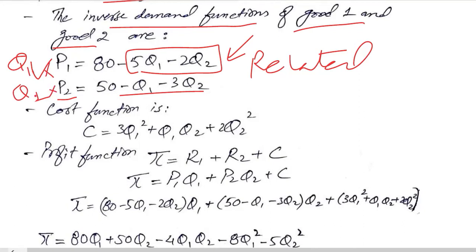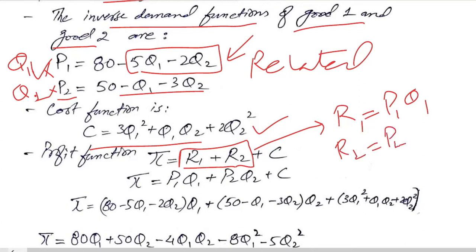So this is the cost function, and this is the profit function: π = R1 + R2 + C. R1 and R2 are the two revenues, and we have to calculate their sum, where R1 is equal to P1 into q1 and R2 is equal to P2 into q2.